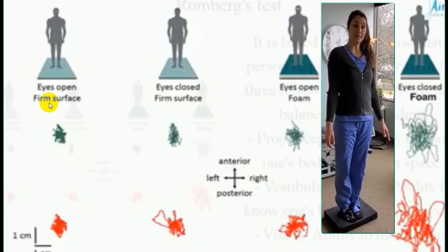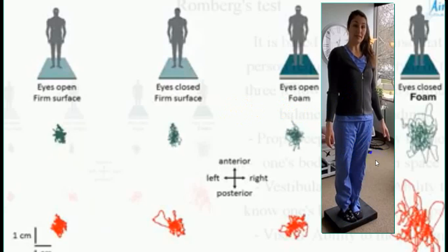With eye open on a firm surface, two legs together, arm by the side, then with eye closed. You can make it more sensitive by standing on foam — a soft material — repeating the same with eye open, two legs together, arm by the side, and then with eye closed. When you do it on foam you are reducing the sensory input. In a person with sensory ataxia, the person will start swaying, which will not be increased in a person with cerebellar ataxia or vestibular ataxia, because foam does not make much change for those. This test is frequently used to detect sensory disturbances or sensory ataxia.